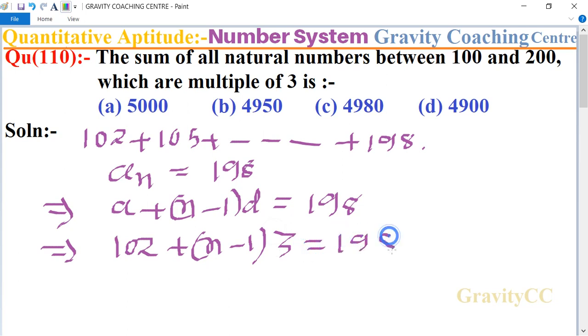This implies that (n minus 1) times 3, and 198 minus 102 equals 96. So 96 is cancelled by table of 3, which gives us 32.